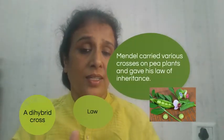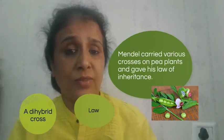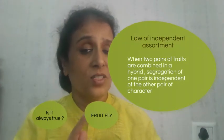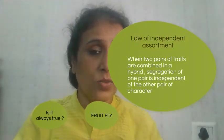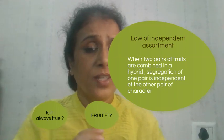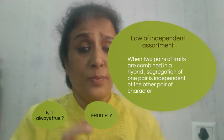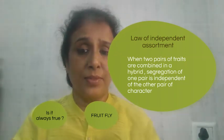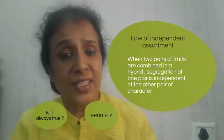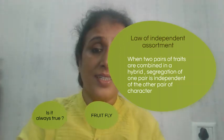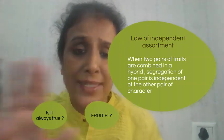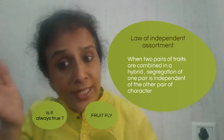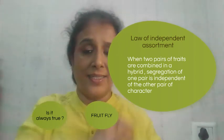On the basis of this, he gave the law of independent assortment. According to this law, when two pairs of traits are combined in a hybrid, the segregation of one trait is totally independent of the other pair of traits — they go independently.